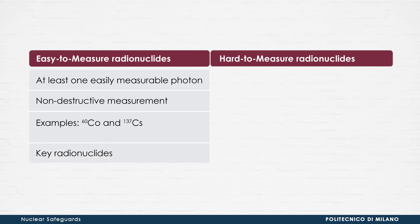Easy-to-measure radionuclides are also called key radionuclides. In fact, they can be easily measured in a large number of samples and used to estimate some hard-to-measure radionuclides, thanks to spatial correlation factors — the scaling factors.